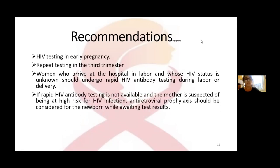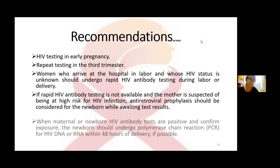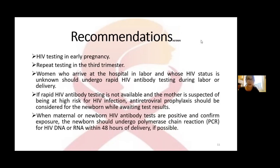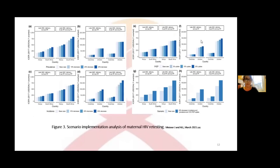Women in labor whose HIV status is unknown should undergo rapid HIV antibody testing during labor or delivery. If rapid HIV antibody testing is not available and the mother is suspected of being at high risk for HIV infection, anti-retroviral prophylaxis should be considered for the newborn while awaiting test results. When maternal or newborn HIV antibody tests are positive and confirm exposure, the newborn should undergo polymerase chain reaction of HIV DNA or RNA within 48 hours of delivery if possible.